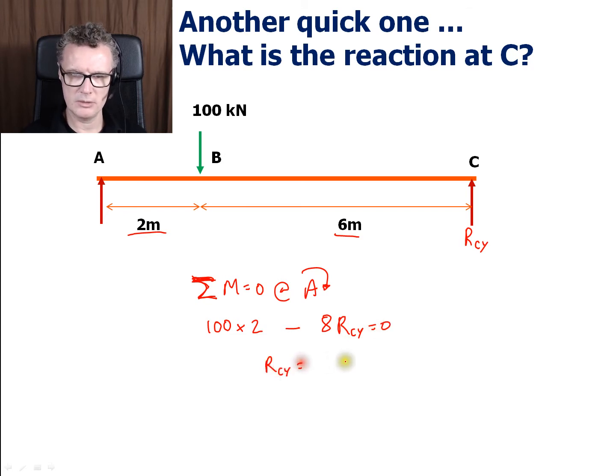That gives me Rcy equals 200 divided by 8, so it's 100 divided by 4, which equals 25.